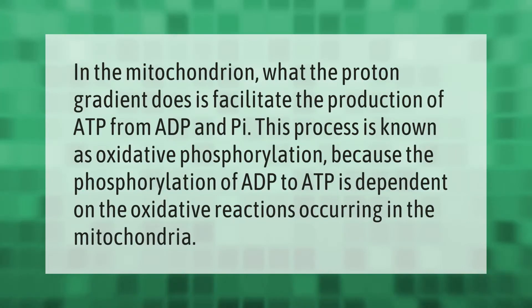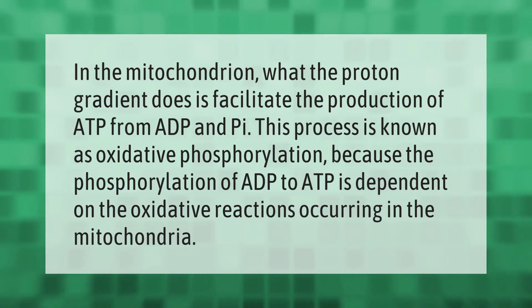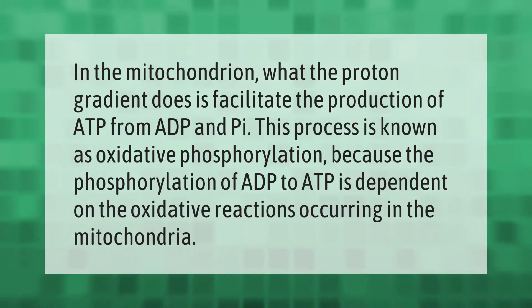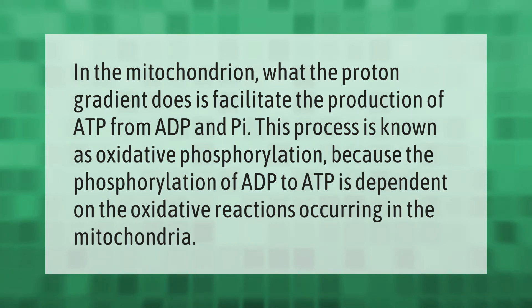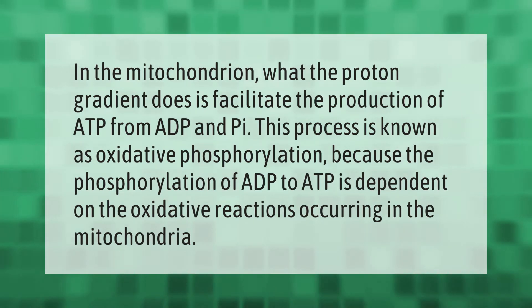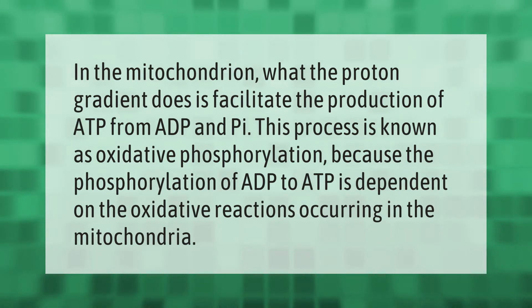In the mitochondrion, the proton gradient facilitates the production of ATP from ADP and Pi. This process is known as oxidative phosphorylation, because the phosphorylation of ADP to ATP is dependent on the oxidative reactions occurring in the mitochondria.